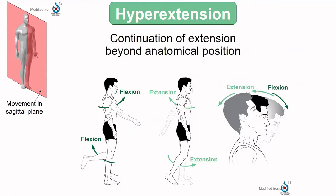Certain joints allow for extension beyond the return to anatomical position. Most of us aren't able to hyperextend at the elbow — when we straighten out it has an end to it — but we can hyperextend at the shoulder. At the point where the arm returns to anatomical position it is called extension, and as the arm moves behind the body, that is called hyperextension.